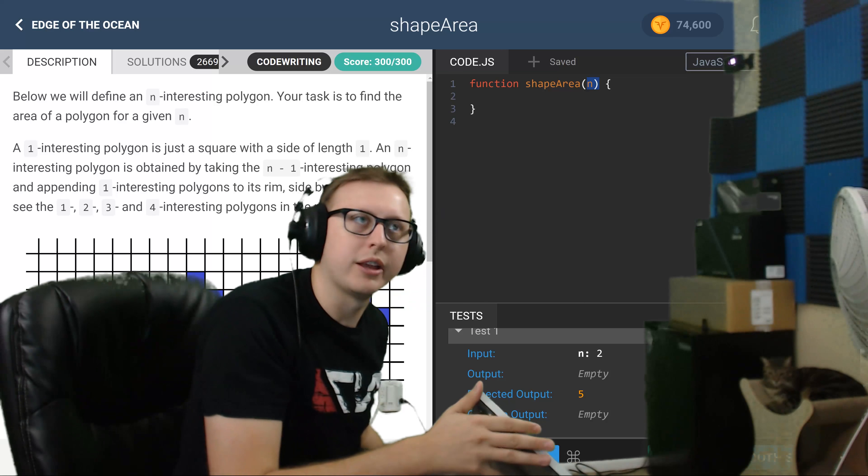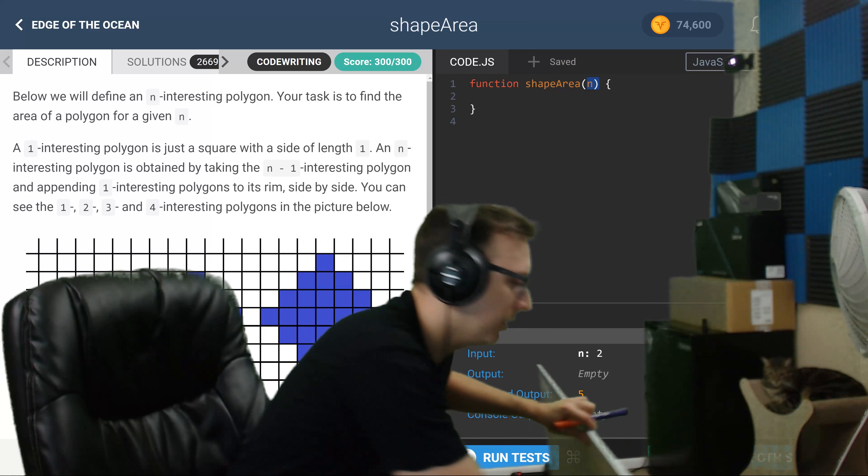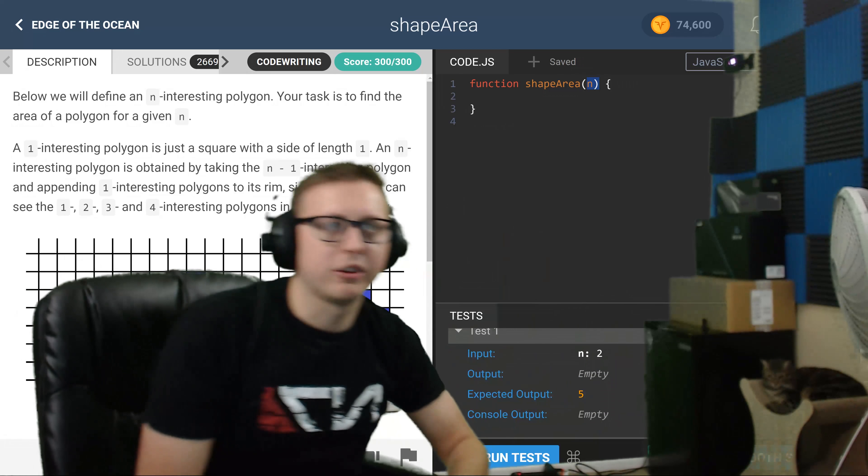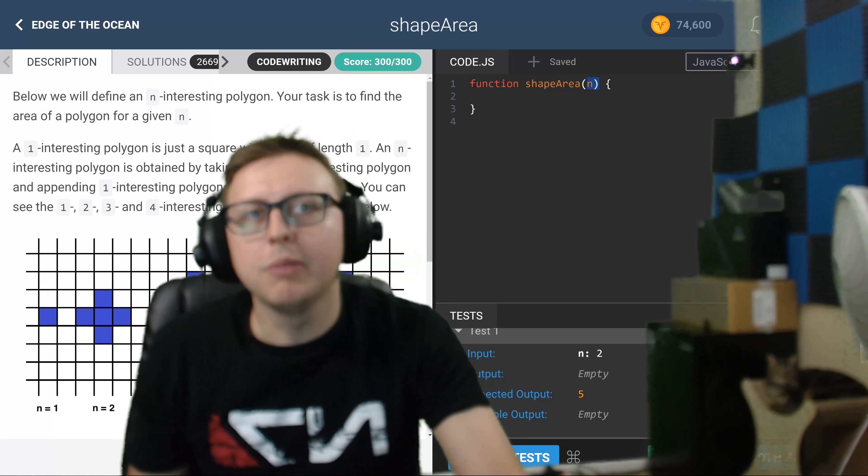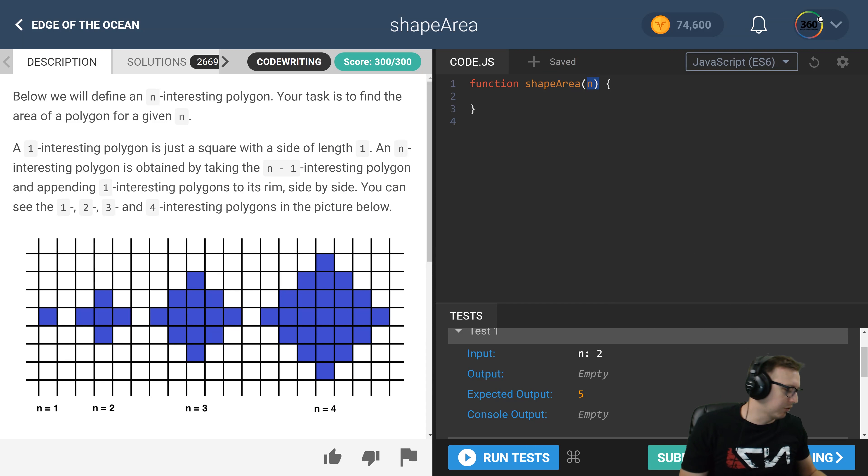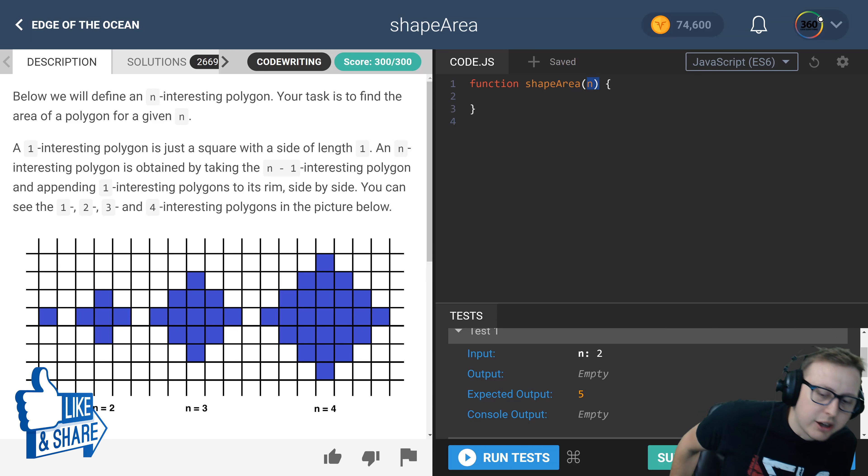But that became very apparent once I drew that out. So I think it's a good example of how maybe you can use a whiteboard to solve an algorithm if you're struggling with it. And this one was one for me, for some reason. I don't know if I was tired that day or what, but I didn't fully get it.